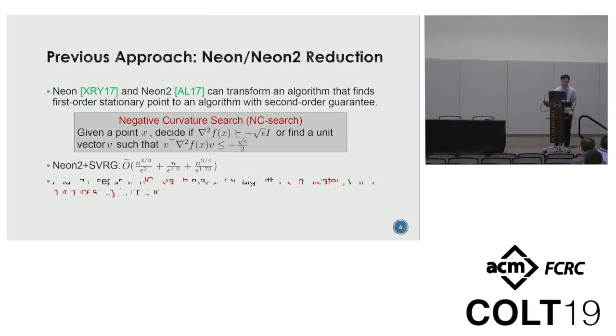What's the problem of this reduction? Adding a separate NC search makes the algorithm complicated and is not necessary in practice. Our algorithm doesn't need the NC search, so we get a simpler algorithm.